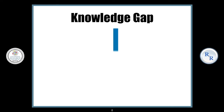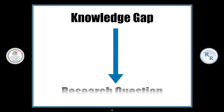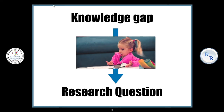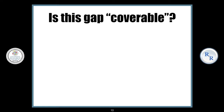Now we have to go from a knowledge gap to a research question. How exactly are we going to do this? First, we need to ask ourselves: is this gap coverable? This is also known as the feasibility of a research question. There are three types of feasibility that you need to think about.